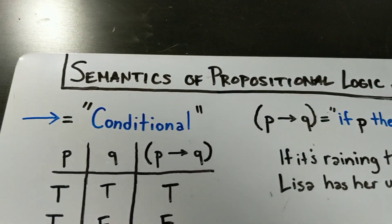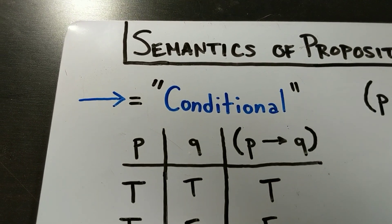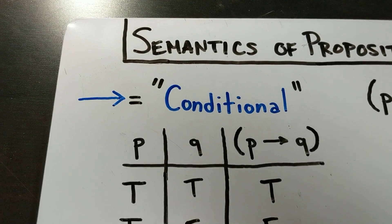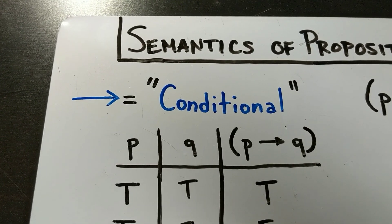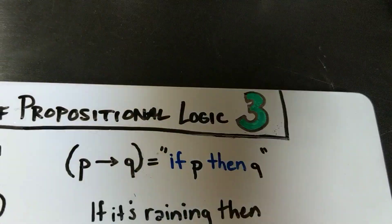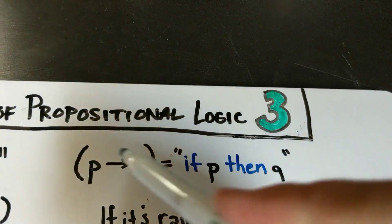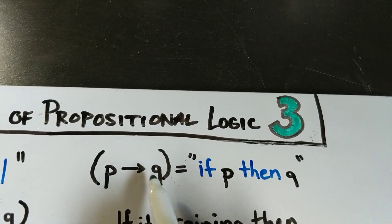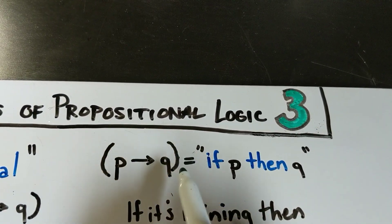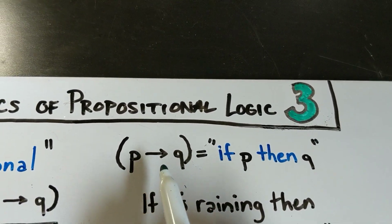The first symbol we're going to talk about is the one-directional arrow pointing to the right, which we call the conditional symbol. Our syntax for propositional logic requires that you take two well-formed formulas and combine them using a conditional symbol and put that in parentheses. That's how you make a well-formed formula using the conditional symbol.